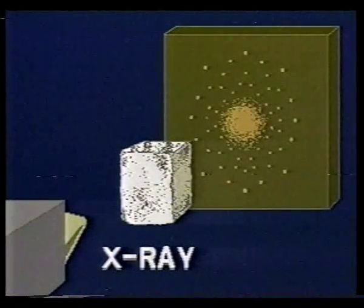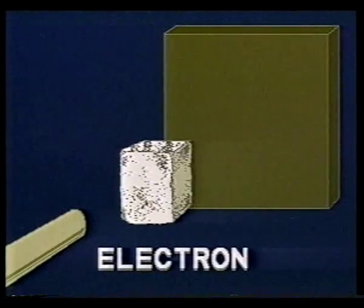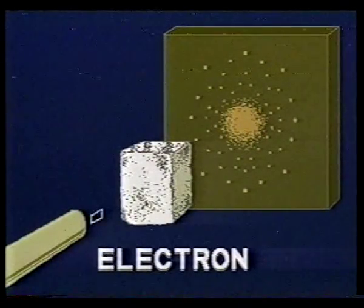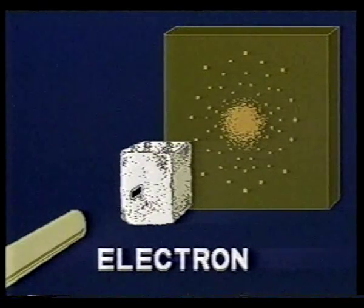The atoms of the crystal line up to produce a series of slits running in two directions. X-rays passing through the salt crystal produce a characteristic interference pattern. Could electrons show evidence of their wave nature in the same way? The answer is yes. Electron particles passing through a crystal produce a very similar interference pattern. An electron is a particle of matter, yet it has wave characteristics.